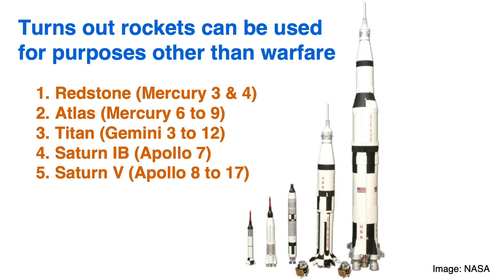Shown here are the five rockets of the early US human space program, ordered by number. First is the Redstone rocket, used for the first two Mercury missions of Al Shepard and Gus Grissom. The Redstone rocket was not very powerful, so both of those flights were suborbital — they didn't go into orbit around the Earth, but went up to space and came back down following a parabolic path. The Mercury program then moved on to the Atlas rocket, which being more powerful, allowed astronauts to go into orbit, starting with John Glenn's Mercury 6 mission.